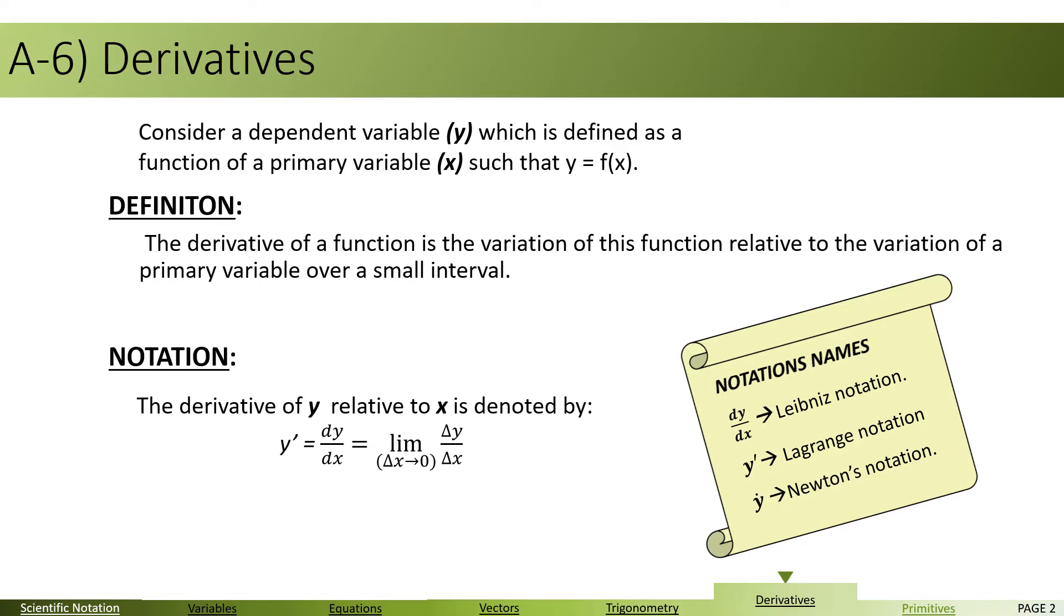These notations, when you say y prime or when you say dy by dx, are widely used in mathematics. However, dy by dx is rarely used in math in secondary classes, but it's widely used in physics. Now both notations are correct. dy by dx is what's known as Leibniz notation, while y prime is the Lagrange notation.